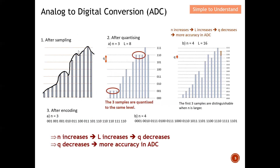This is what we concluded. For example, in the first stage I do a sample. The key difference between the second and third graphs is that in the middle graph I have N equals 3, meaning 3 bits, so the quantization level equals 8. In the diagram on the right, the number of bits is 4 and 2 to the power 4 equals 16, so the quantization level increases.